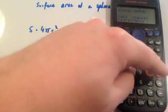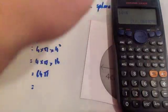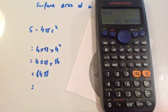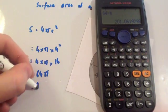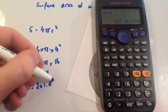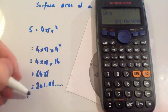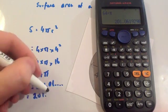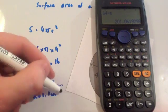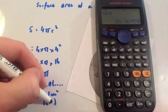And you get 64 times π, and you need your answer 201.0.